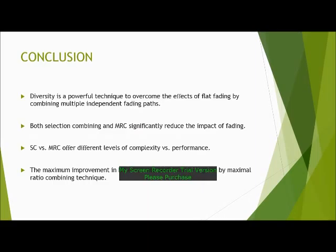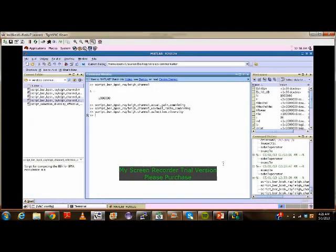So what are the conclusions? Diversity is a powerful technique to overcome the effects of flat fading by combining multiple independent fading paths. Both selection combining and maximal ratio combining techniques significantly reduce the impact of fading, offering different levels of complexity versus performance. The maximum improvement in bit error rate performance is given by maximal ratio combining. Now let me take you to the implementation using MATLAB.